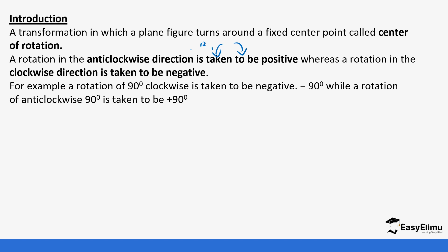For example, a rotation of 90 degrees clockwise is taken to be negative 90, while a rotation of 90 degrees anticlockwise is taken to be positive 90. In questions, you can either be given the words 'clockwise' or 'anticlockwise' with an angle, or you can be given a minus or positive sign with the angle. Make sure you are able to distinguish between the two.